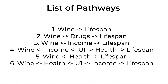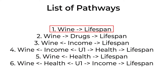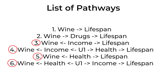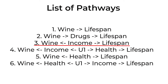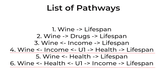If we go through and carefully calculate all the different ways we can walk from wine to lifespan, we come up with six pathways. Two of these are front door paths — our good paths. Wine could affect lifespan directly, or it could affect lifespan through affecting the amount of drugs you take. We also have four bad paths, which all happen to be back door paths with an arrow pointing towards wine.